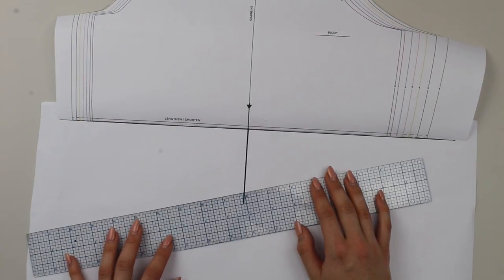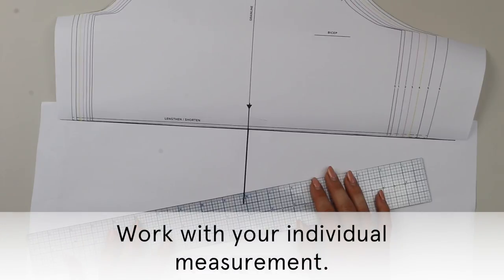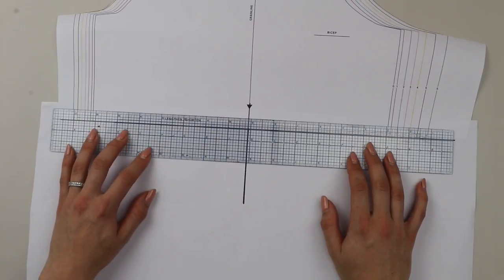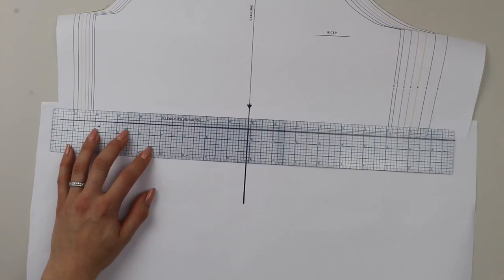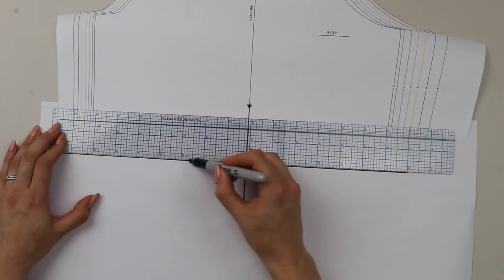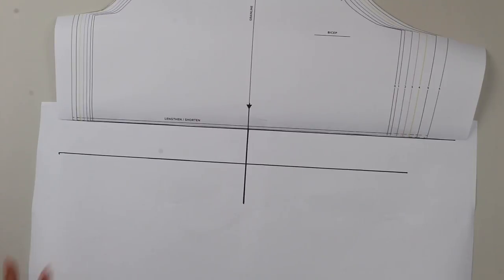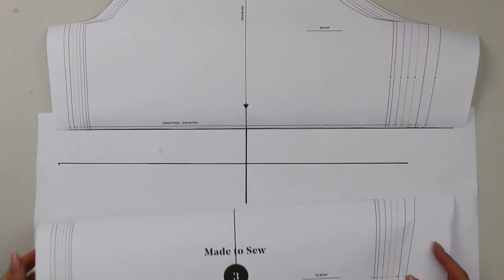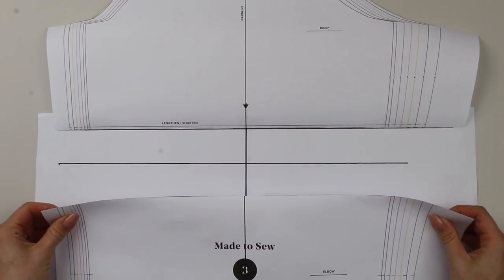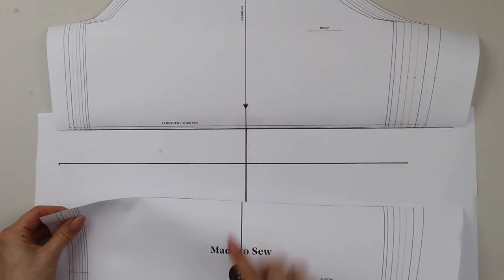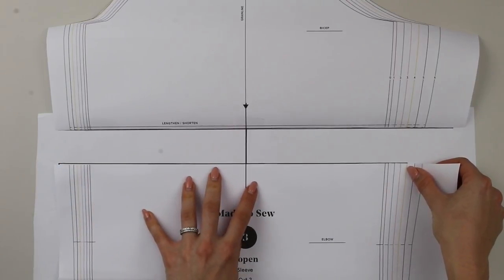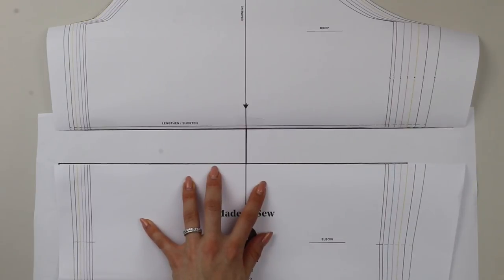Then you want to decide how much you're going to add. I'm going to be working with an inch and a half, approximately four centimeters. You're going to draw another line that distance from the top line — so an inch and a half or four centimeters from the top line — keeping it nice and straight with your ruler. Next, take the bottom part of the sleeve and slot it on. The cut line of the sleeve needs to hit that horizontal line you've drawn, and the vertical grain line on the sleeve needs to slot back up so that the grain line continues all the way through. Then stick that down.